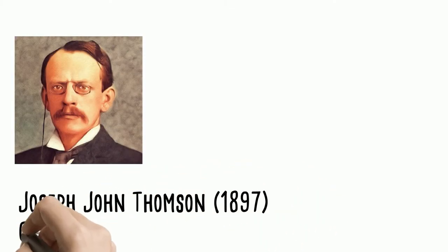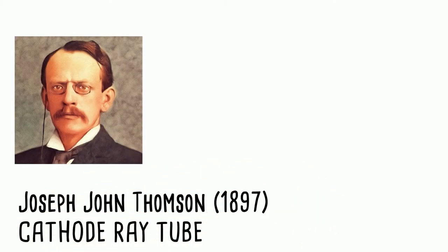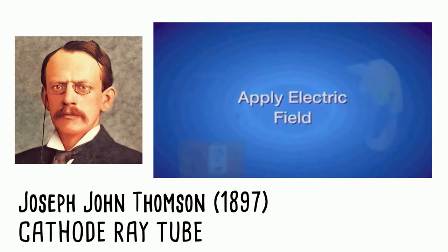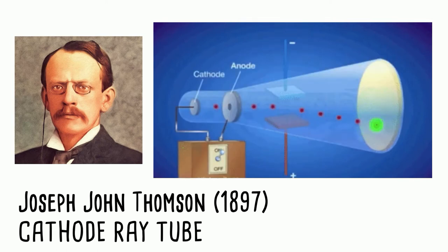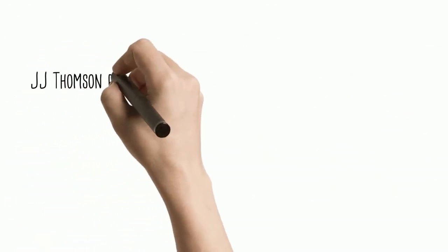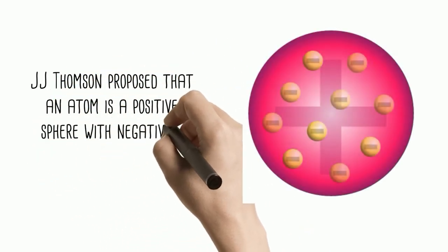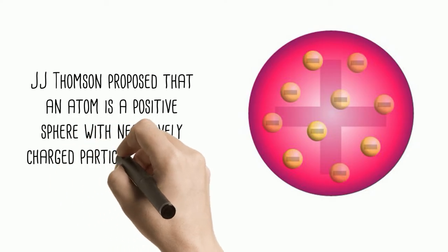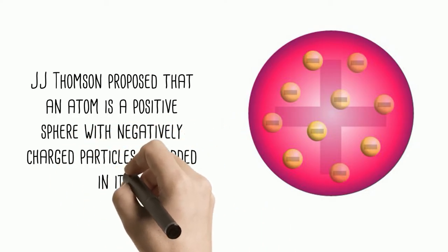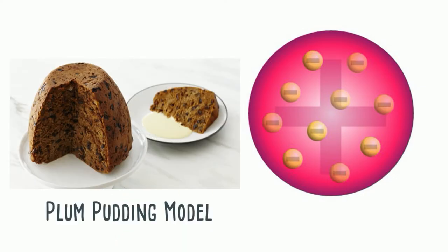In 1897, Joseph John Thompson experimented on the cathode ray tube. He noticed that exposing a negative field deflects the stream of particles and exposing a positive field attracts it. This suggests the existence of negatively charged particles in the stream. Because of this, J.J. Thompson proposed that the atom is made up of a positive sphere with negatively charged particles embedded in it. He called it the plum pudding model because of the resemblance.